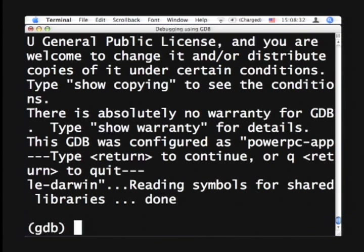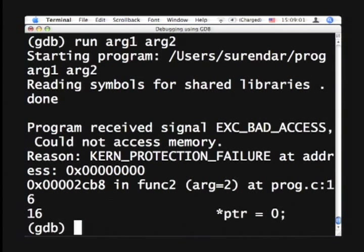The first command we need to understand is how to run the program inside the debugger, and the command to use is run. So you say run and you'll run the program. If you need to pass some arguments to the program, you would pass it right here. So you would say arg1, arg2, and those are passed to the particular application. Our sample program does not take any inputs in the arguments, so it doesn't really matter. So we run this program and sure enough it failed.